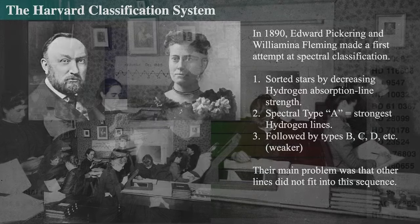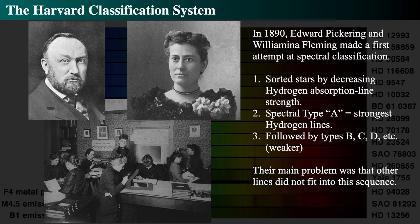In 1890, Pickering and Wilhelmina Fleming started their first attempt at spectral classification. They sorted the stars by the hydrogen absorption line strength — the A stars had the strongest hydrogen absorption lines, going further down with weaker and weaker hydrogen absorption. As hydrogen got weaker, other lines magically appeared, making it hard to decide which lines to classify by. They started with A, B, C, D, E, F, noting they got weaker and weaker, but other lines protruded in. Their best guess remained hydrogen absorption, so that's what they stuck with.